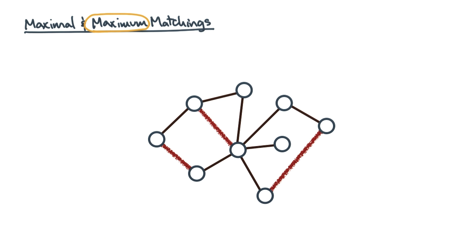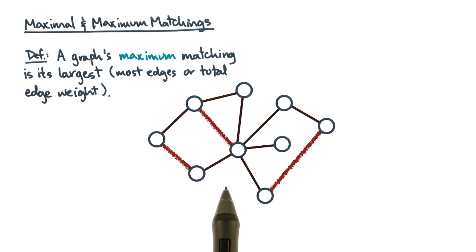A maximum matching is the largest matching. For example, this graph has at least one more matching with more than three edges in it. Can you find it? Here's one, though there might be more.